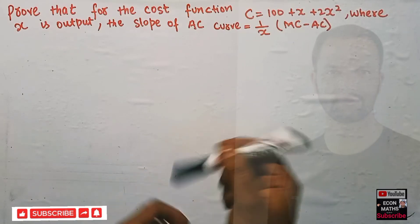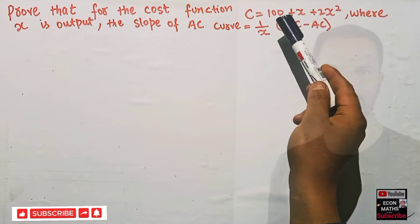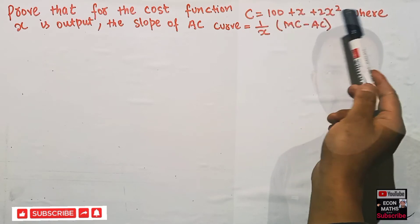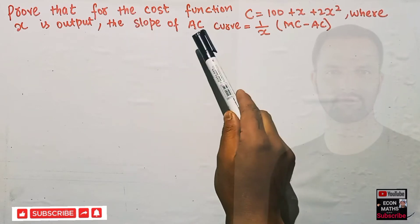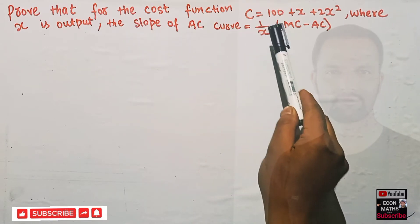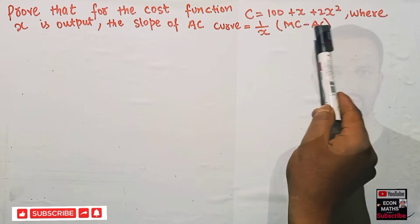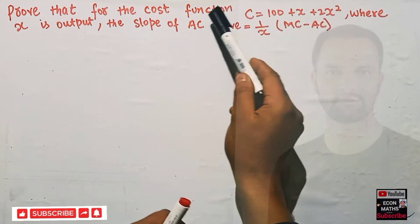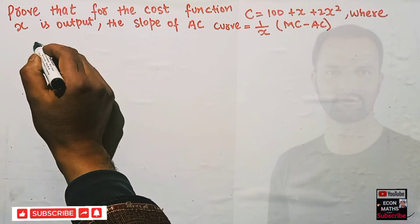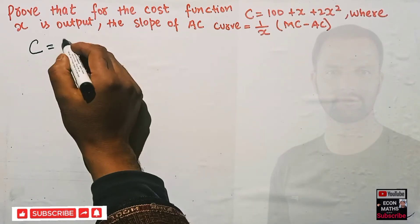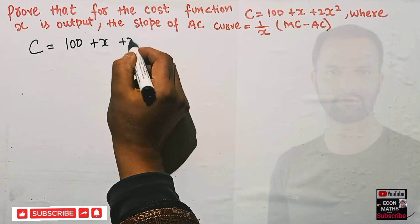In this question we need to prove that for the cost function C = 100 + x + 2x², where x denotes the output, the slope of the average cost curve is equal to (1/x) × (marginal cost minus average cost). We need to prove that relationship. Our cost function is given as C = 100 + x + 2x².